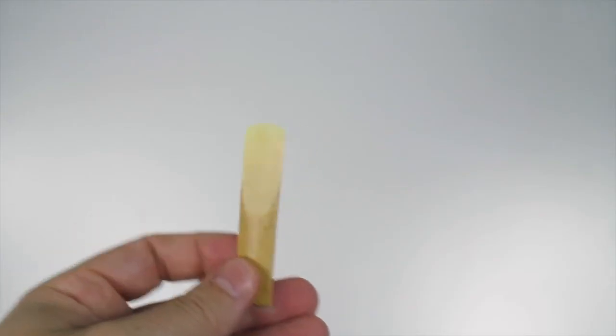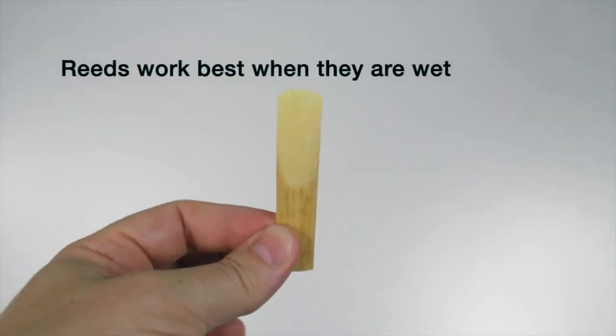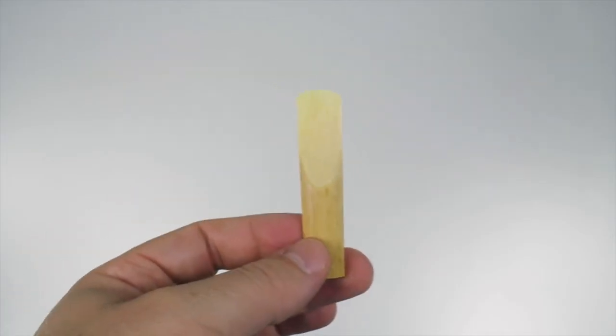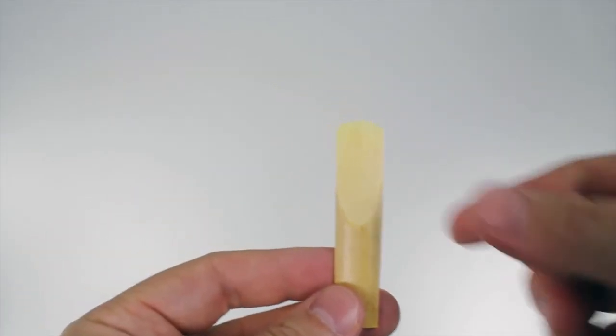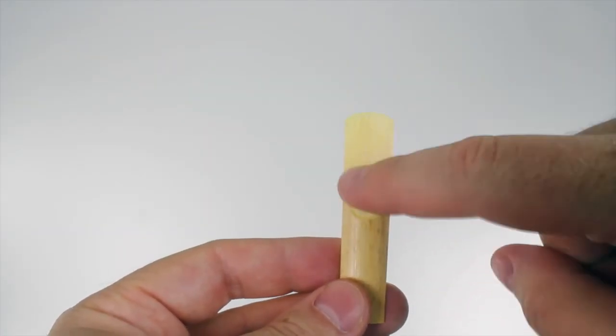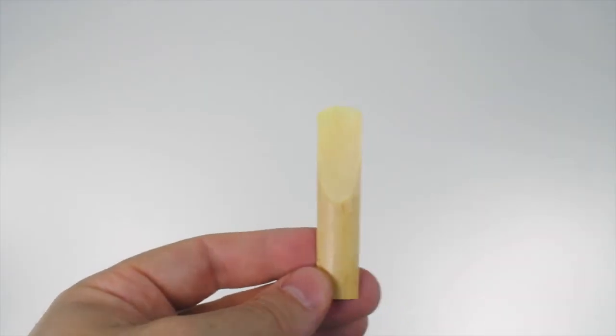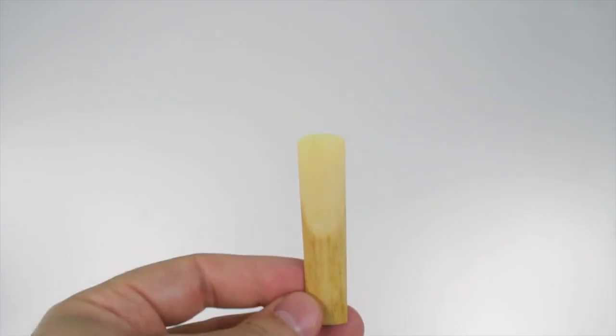And the final thing we're going to learn about reeds is reeds work best when they are wet. So the first thing we do when we're putting our instrument together is you place the reed in your mouth. Place the thin end of the reed in your mouth up till about this point. So this part should be sticking out of your mouth. And you hold it there while you put your instrument together.